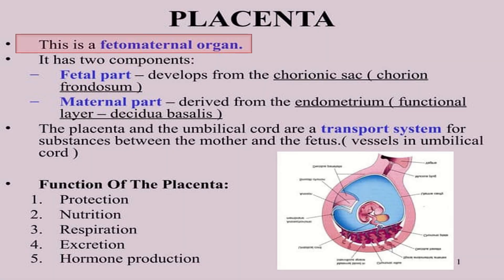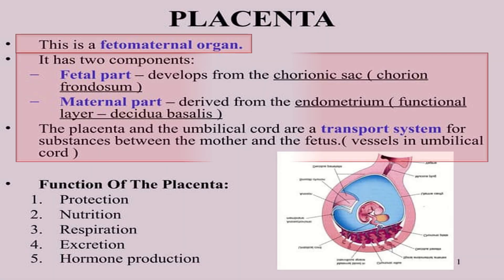Placenta is a fetomaternal organ. It has two components. The fetal part develops from the chorionic sac, which is called chorionic frondosum. The maternal part is derived from the endometrium, which is the functional layer called decidua basalis. The placenta and the umbilical cord are the transport system for substances between the mother and the fetus.